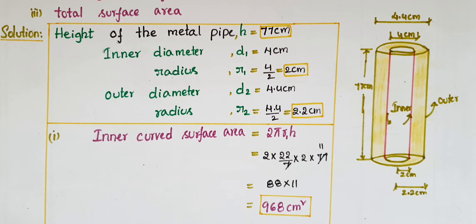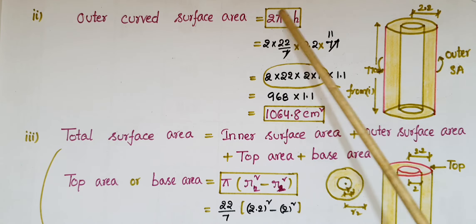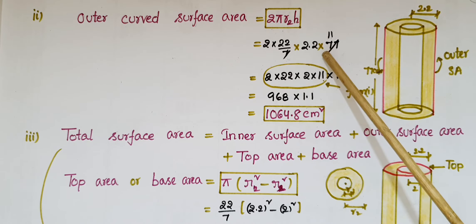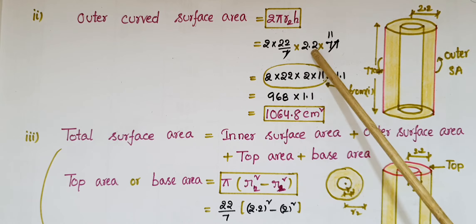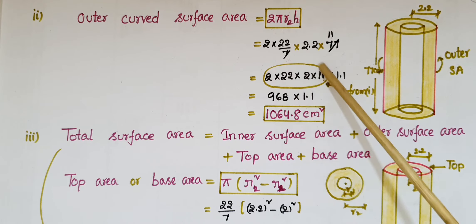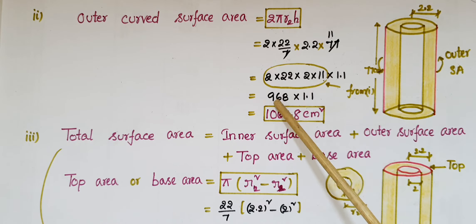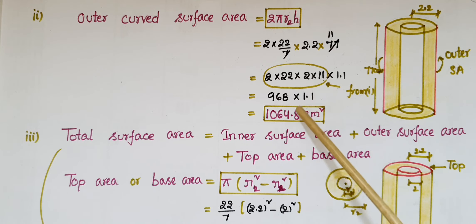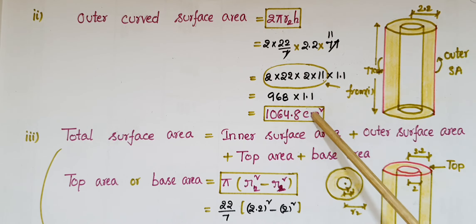Next, we find the outer curved surface area. The formula is 2 pi r2 h, equal to 2 into 22/7 into r2 = 2.2 into 77. We write 2.2 as 2 into 1.1, so the expression becomes 968 into 1.1. Multiplying 968 by 11 and placing the decimal one digit from the right gives 1064.8 centimeters squared.